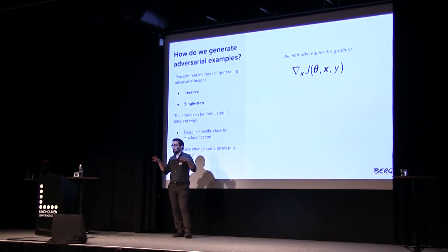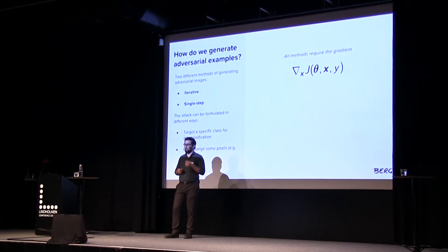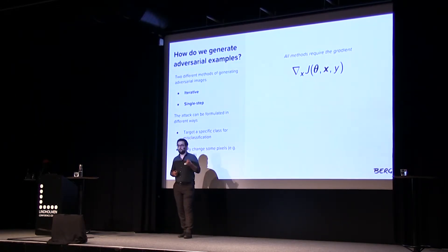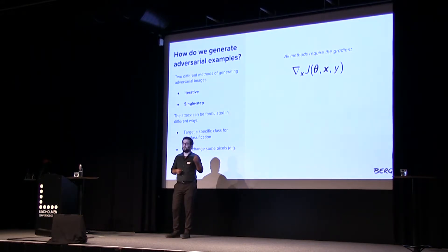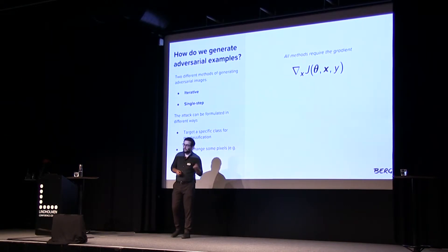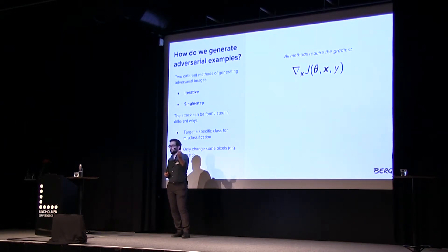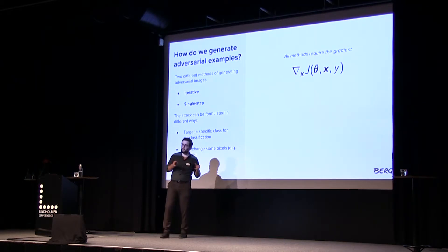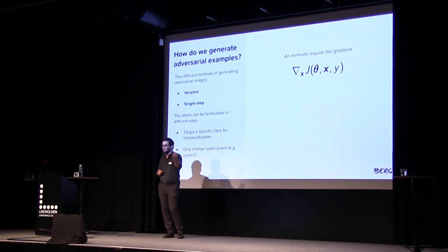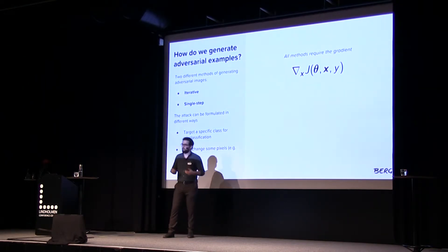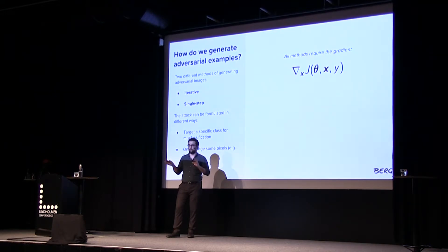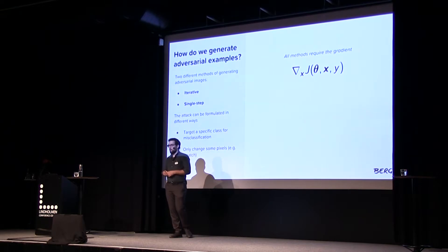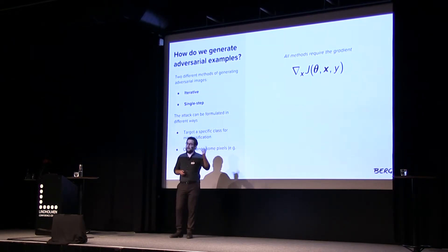At the core, all these methods require a gradient to be computed — and this gradient is computed with regard to the input image. Usually when training our models, we compute a gradient with regard to the weights to see how to tweak them to improve performance. Here instead we compute the gradient with respect to the input — every single pixel — to see how we can change these pixels to increase the cost. These methods can be single-step, computing the gradient once to formulate the attack, or iterative, doing this multiple times. You can also target a specific class for misclassification, or restrict changes to a small patch of the input image.